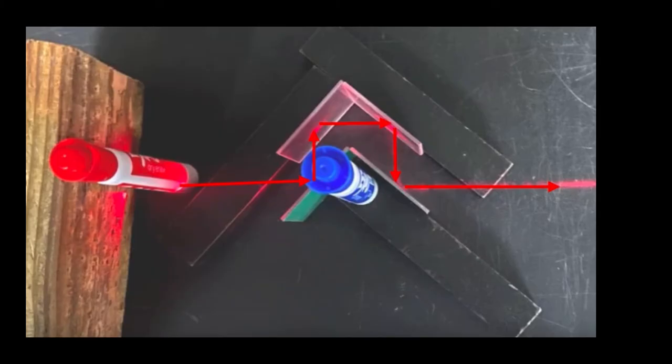Here is a top view of an invisibility cloak that I made with four mirrors. With these four mirrors you can see that the light comes off the red marker, hits this mirror and reflects off to the other sideways mirror, and then it essentially just goes around the blue marker.